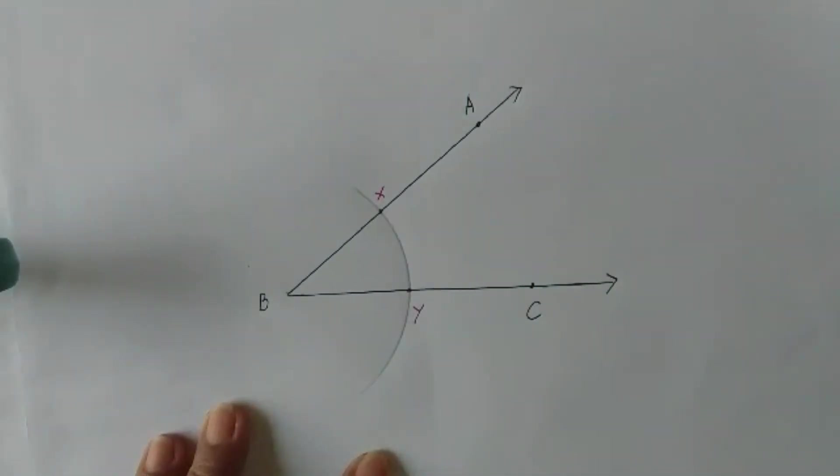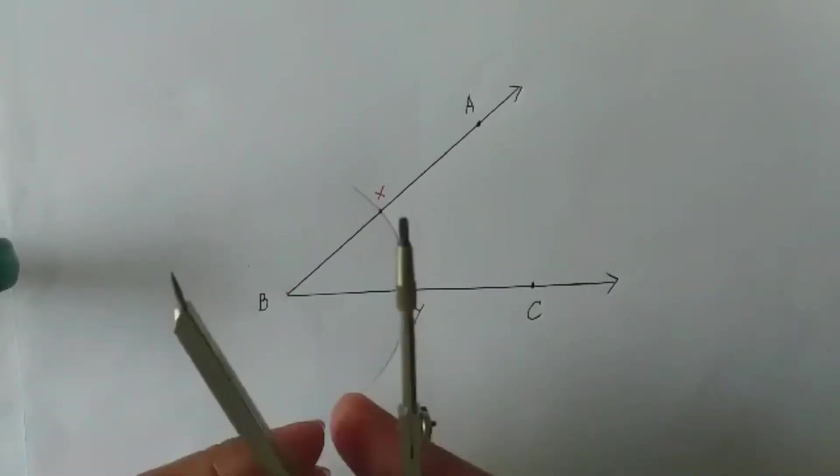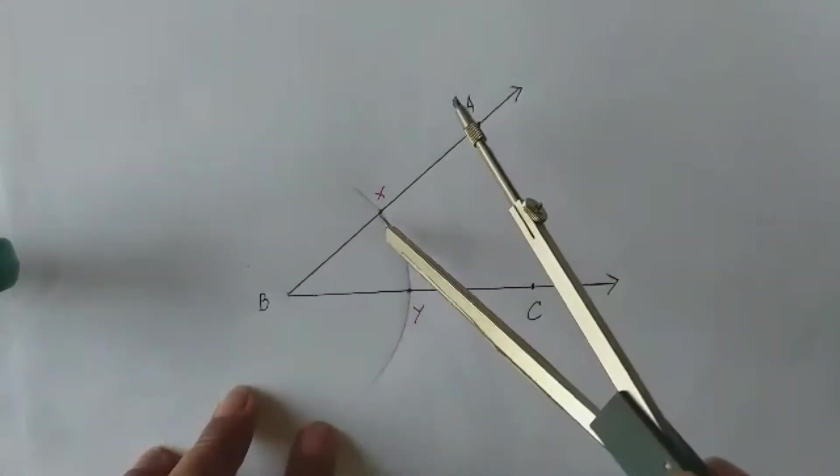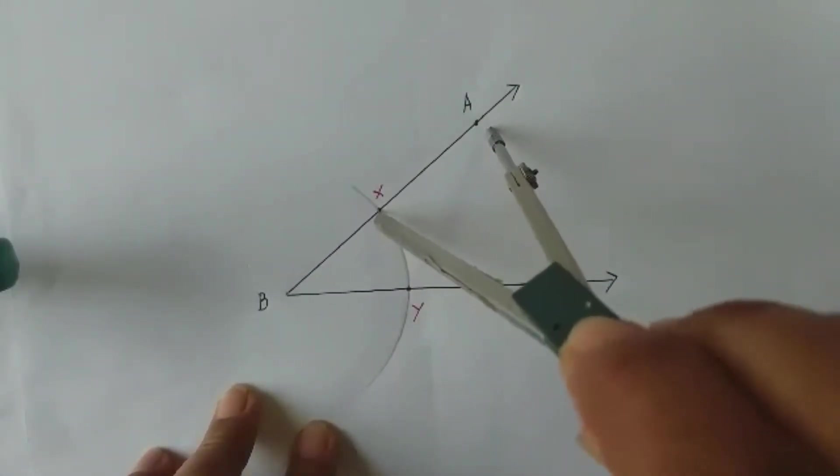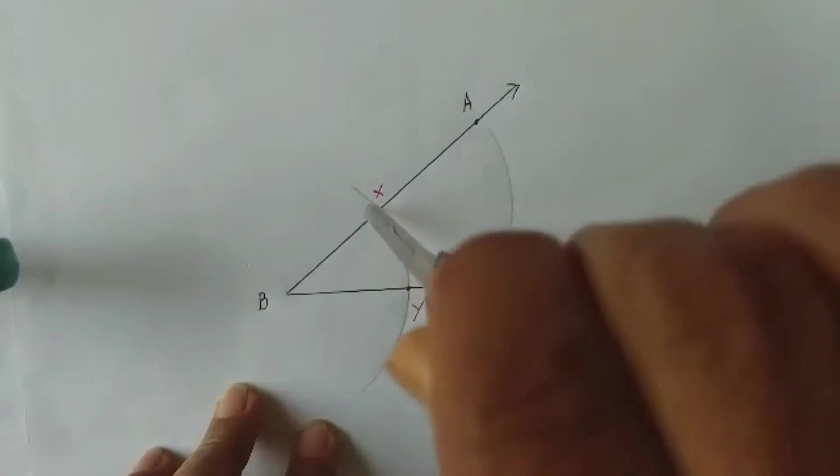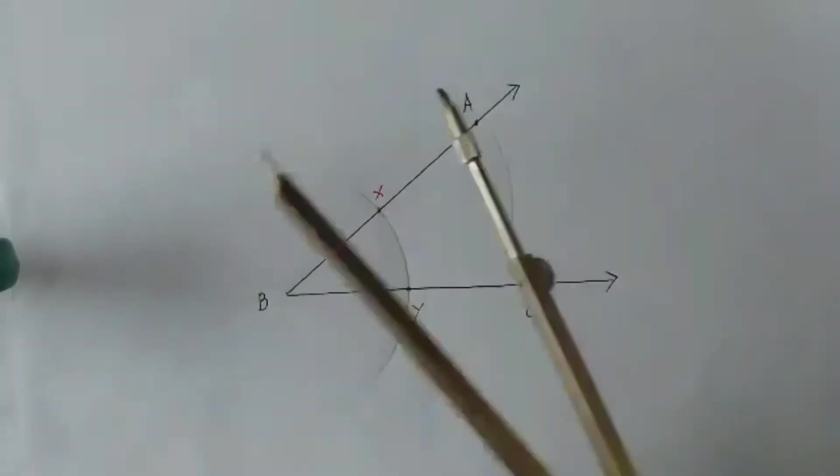And let us name these intersections point X and point Y. Okay, so again get your compass. This time, with a compass point at point X, draw an arc, a small arc at the interior of angle ABC.